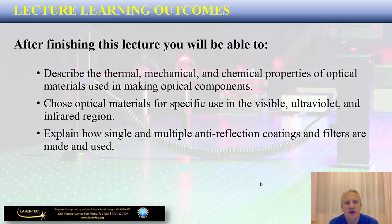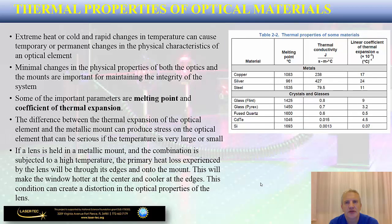Finally, we are going to shift our attention to different types of coatings and filters. We'll see that coatings are often placed on transparent materials for different reasons. We're going to explain different processes to achieve that, and also talk about extreme heat or cold and rapid temperature changes that can cause temporary or permanent changes in the physical characteristics of an optical material.